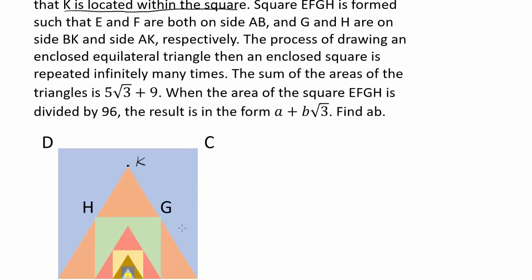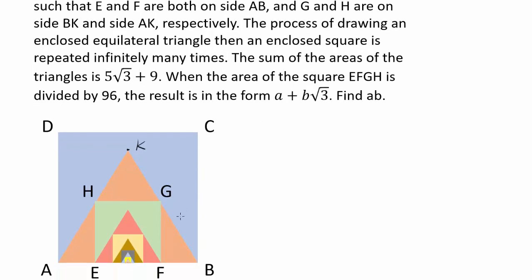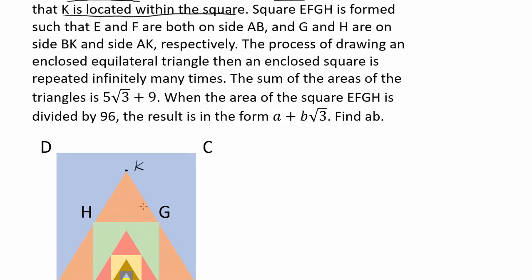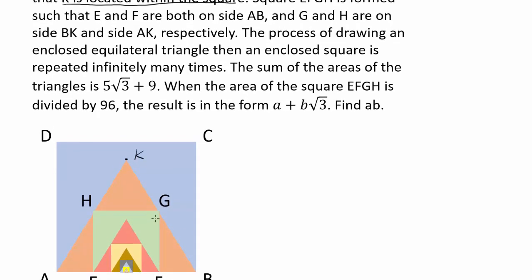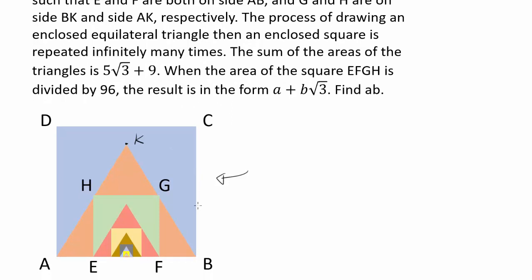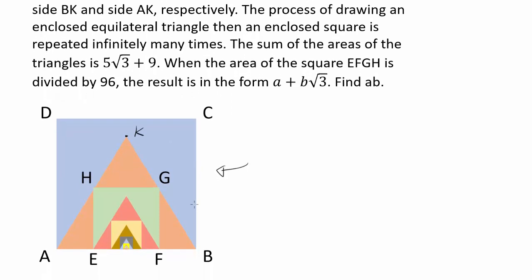Let's continue on. We have square EFGH — that's this square inside right here. We have E and F on side AB, G and H on side BK and side AK. They are showing us that in the diagram. The process of drawing an enclosed equilateral triangle, then an enclosed square is repeated infinitely many times.